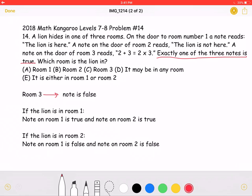If the lion is in room 1, the note on room 1 would be true, and the note on room 2 would also be true. This would mean that two notes are true, which cannot be possible. As stated in the problem right here, exactly one of the three notes is true.